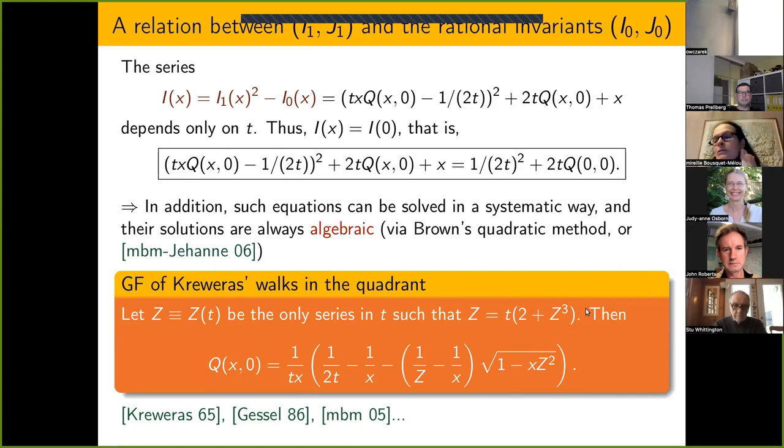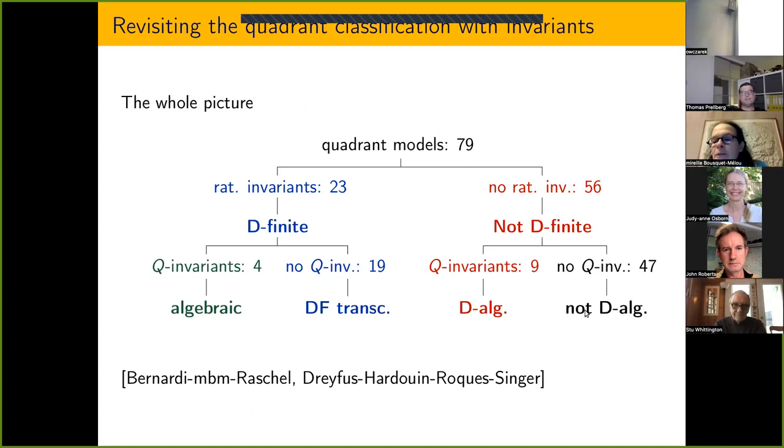So if I summarize, we started from an equation involving Q(x, y) and its two specializations. And using these two pairs of invariants, we've derived an equation involving just Q(x, 0) and its specialization. And in this case, it is because one knows that such equations where you have just one variable that's being replaced by something can be solved in a systematic way, and then the solutions are always algebraic. So in fact, this is the end of the problem for this model. So you may think, well, this is just one example that works nicely. So what about the 79 other models? What happens is that these 23 models that had the finite group and were D-finite are precisely those that admit the pair i_0, j_0 rational invariants. And among them, there are four that admit Q invariants, and they are exactly the algebraic ones. And similarly, here on the non-D-finite side, you have exactly nine models that admit invariants in terms of the series Q and they are the D-algebraic ones. So really, this tells you that this notion of invariants is really central in this classification of quadrant models.